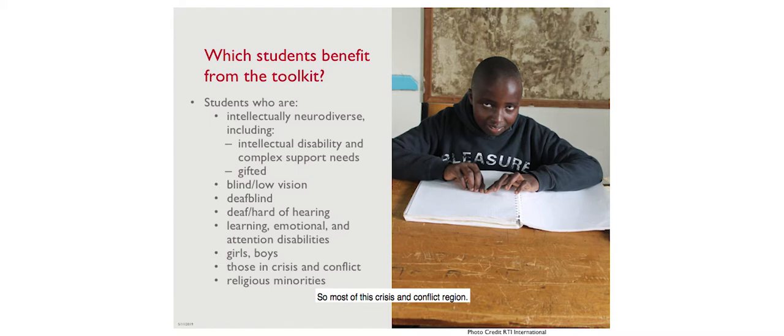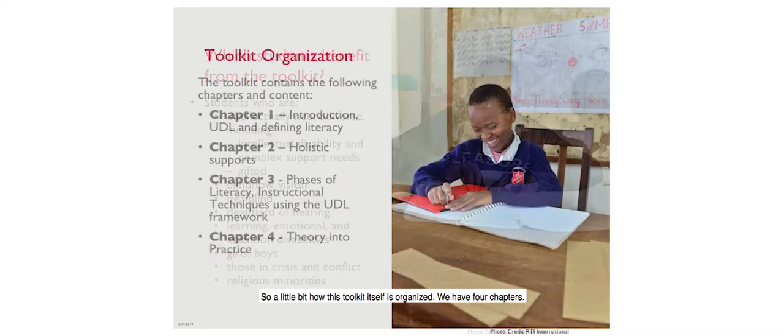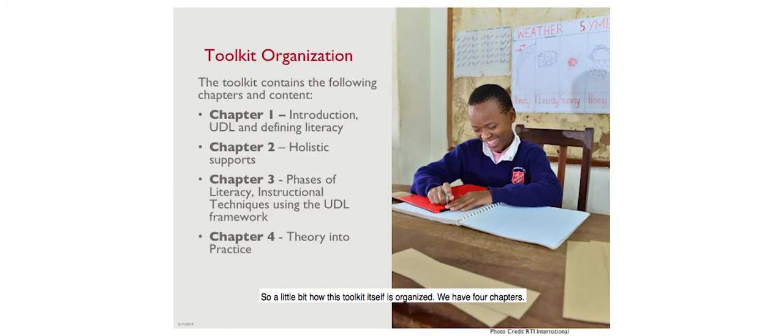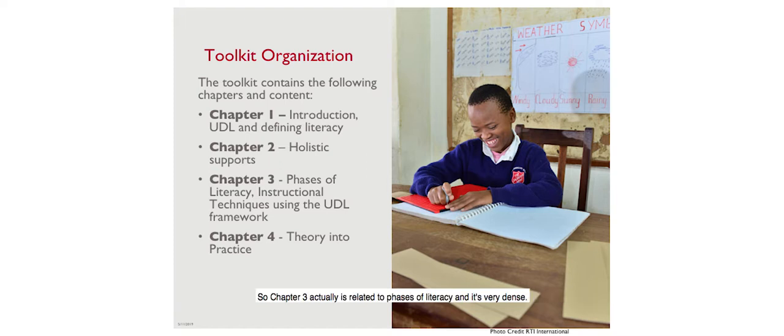Students who benefit include those who are blind, low vision, deaf-blind, deaf and hard of hearing, with emotional or attention deficit challenges, boys and girls - everything in between, including those in crisis and conflict regions. The toolkit has four chapters. For today's first webinar, we will cover chapters one, two, and four. Chapter three, which covers phases of reading literacy, is very dense and will be moved to the second webinar.